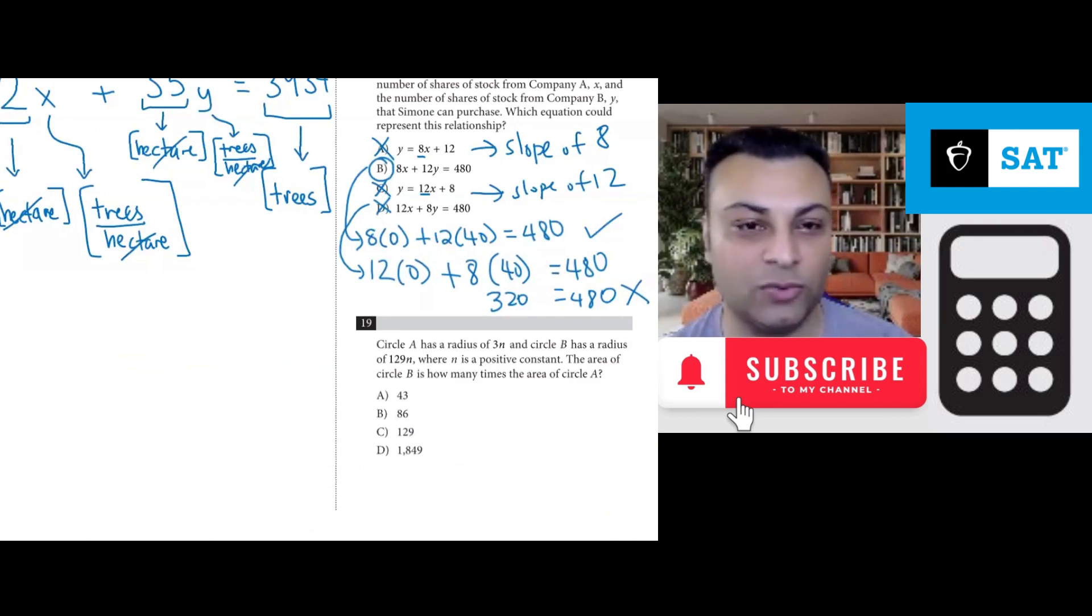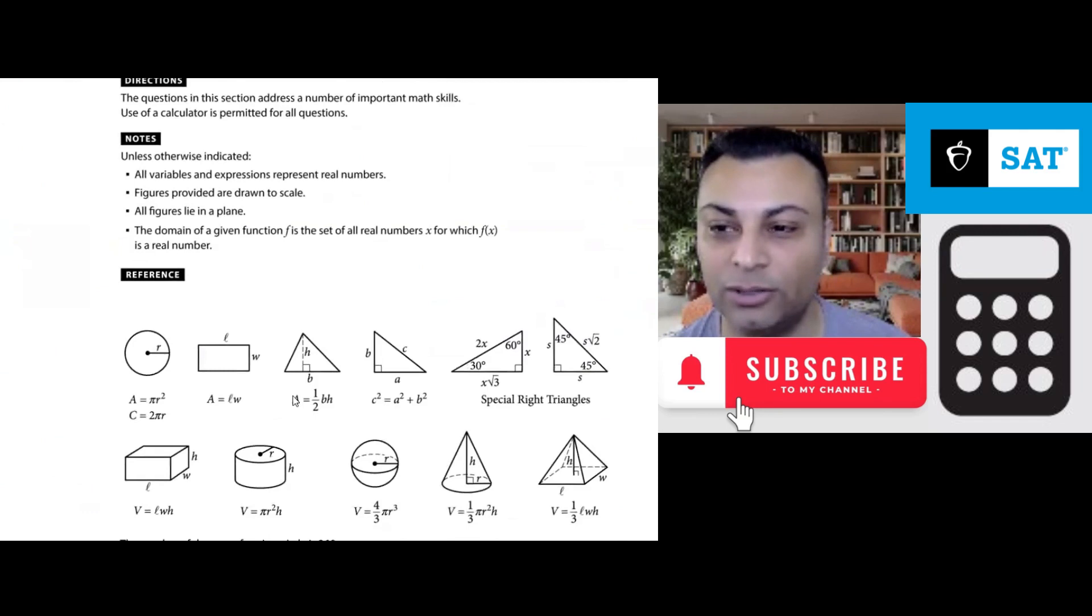For this question, we would like to know the area of a circle. So for that, let's look at the formula sheet. And you would see that the area of a circle is pi r squared, right there. Area equals pi r squared.